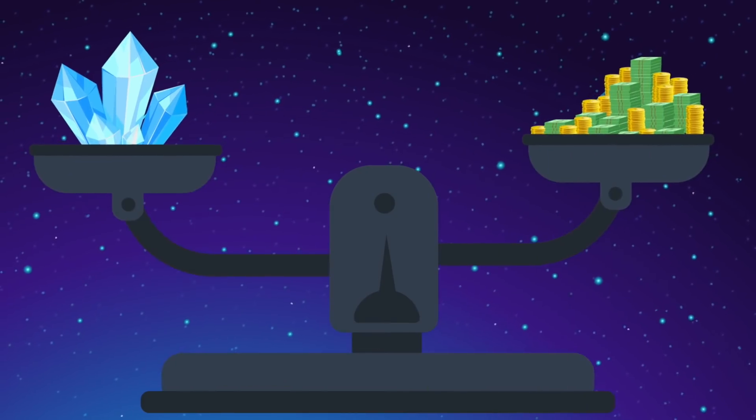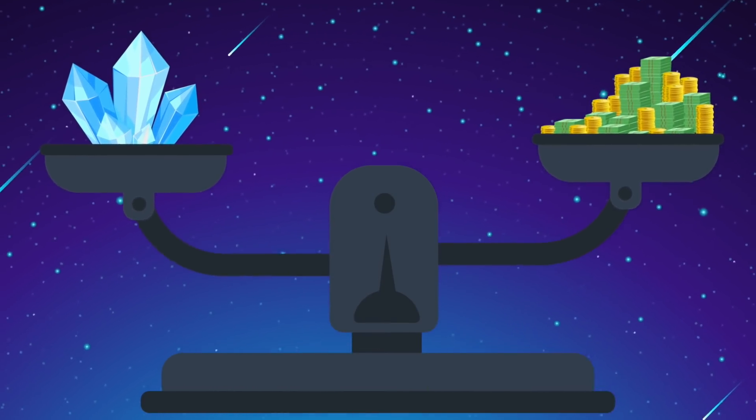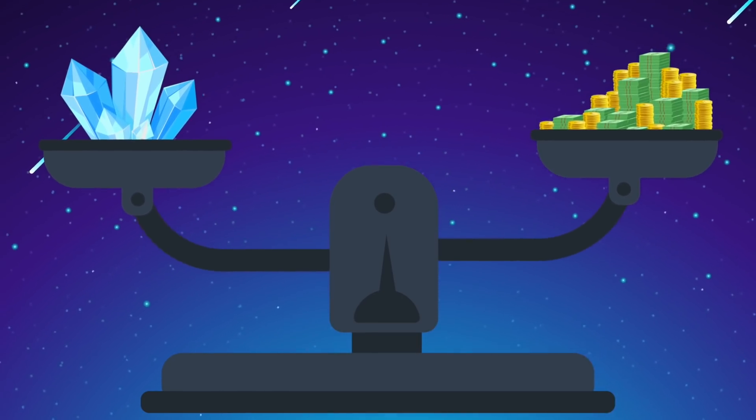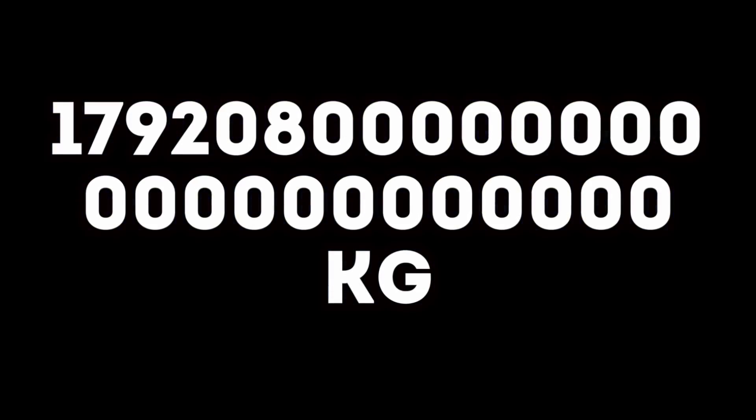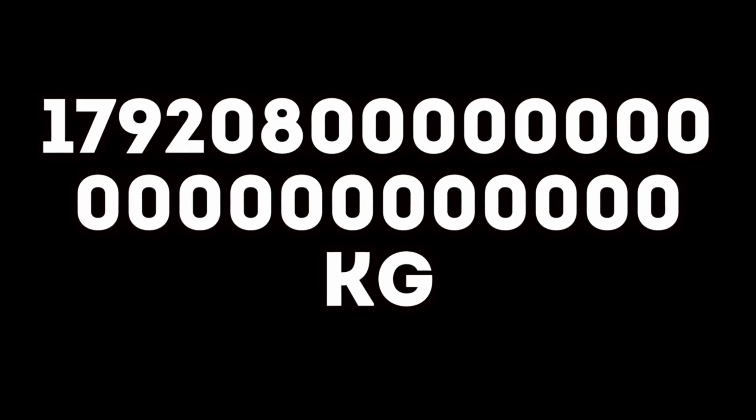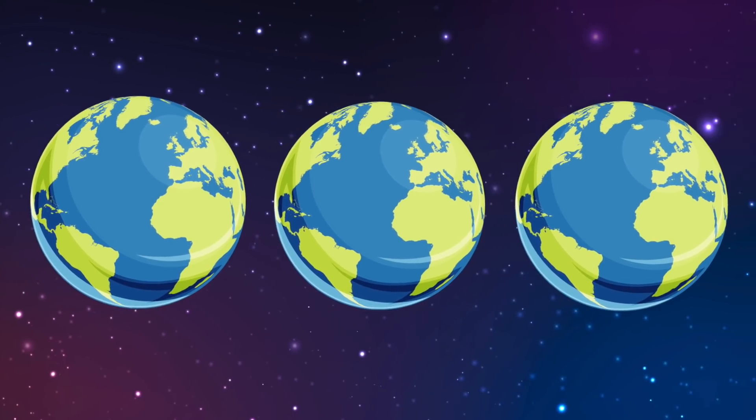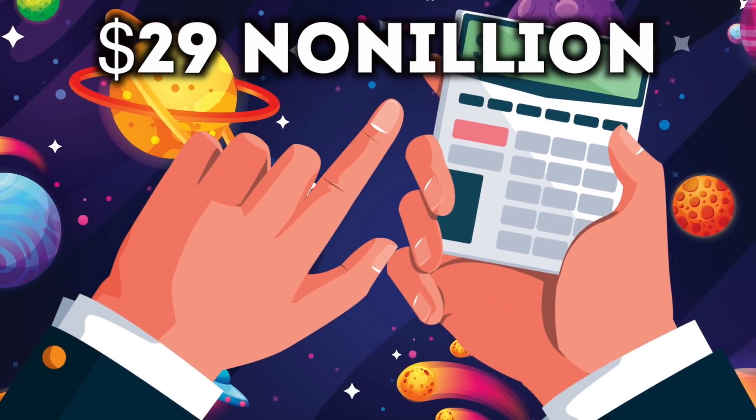But how exactly did a scientist get the number 29 nonillion? Well, it's easy. You need to first get the raw diamond value. One kilogram of raw diamonds is worth a cool 1.5 million dollars. And 55 Cancri e's diamond mass is this number on screen right now. To put it simply, that's three times the mass of the Earth. If you multiply these numbers, that means the value of this planet is 29 nonillion dollars.